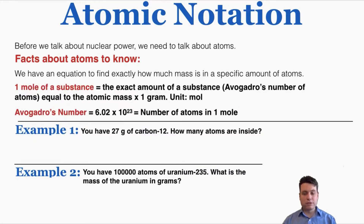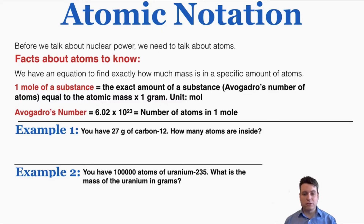The most important thing in this review is calculating the mass of a specific number of atoms. You need to know the definition of one mole of a substance: it equals the atomic mass times one gram. The number of atoms in one mole is Avogadro's number, which is 6.02 × 10²³. This is the number of atoms that exist by definition in one mole of a substance.